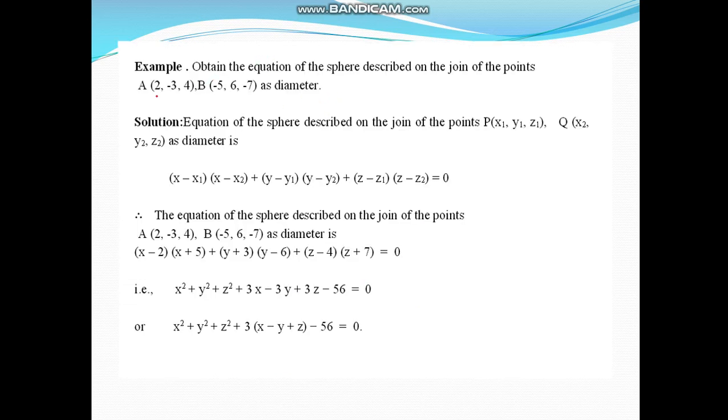Now see this example: Obtain the equation of the sphere described on the join of the points as diameter. The endpoints of the diameter coordinates are given. Find the equation of sphere—just use this formula. So these are x₁, y₁, z₁; these are x₂, y₂, z₂. Let us substitute values: the equation will be (x - x₁)(x - x₂) + (y - y₁)(y - y₂) + (z - z₁)(z - z₂) = 0. Simplify this and you will get equation of sphere. Let us stop here now.